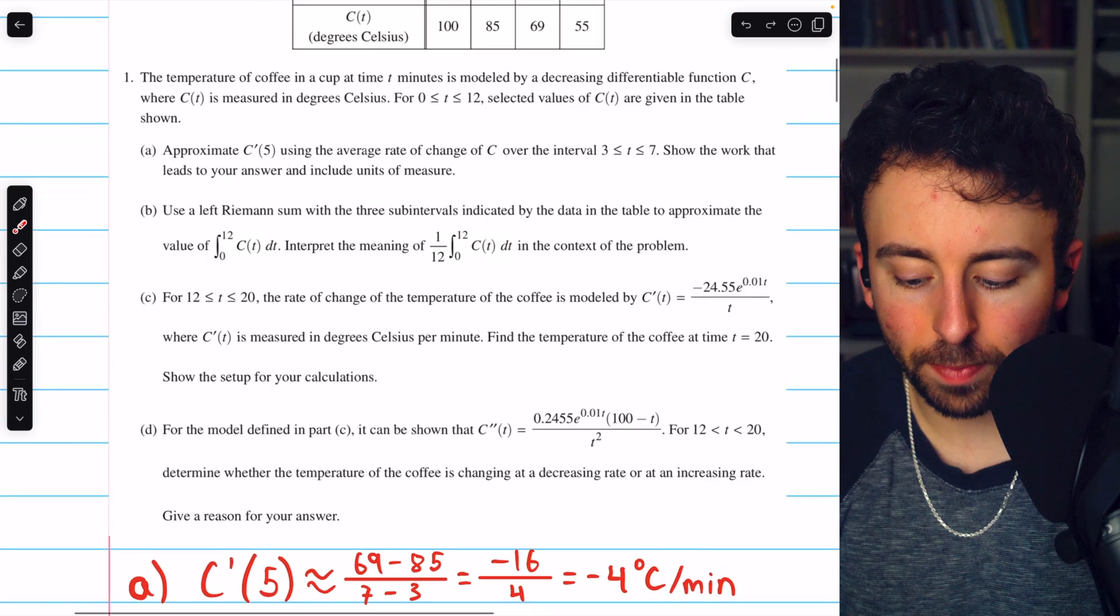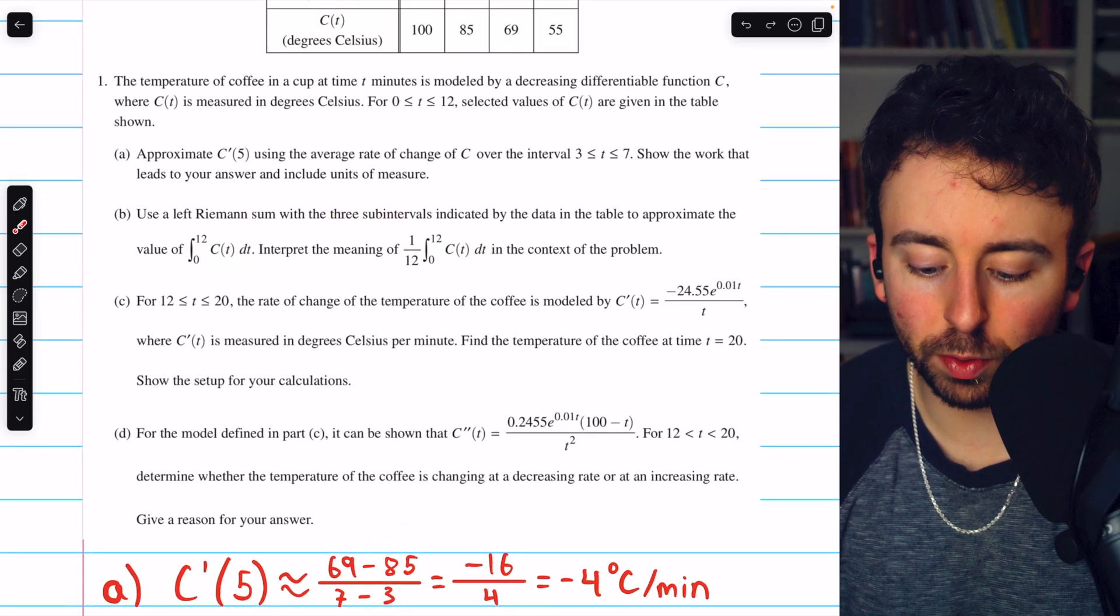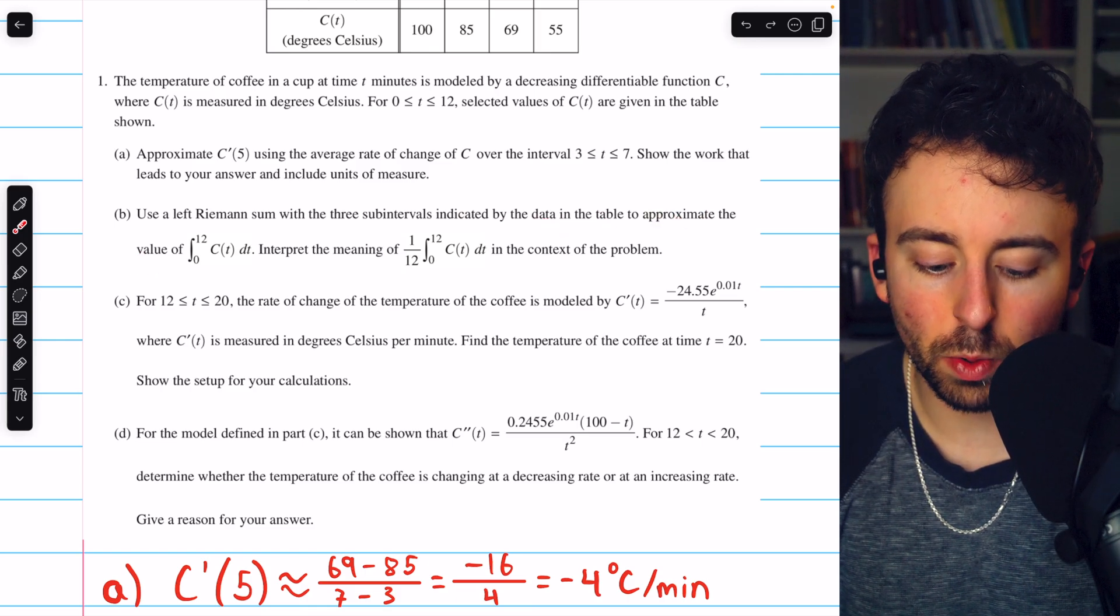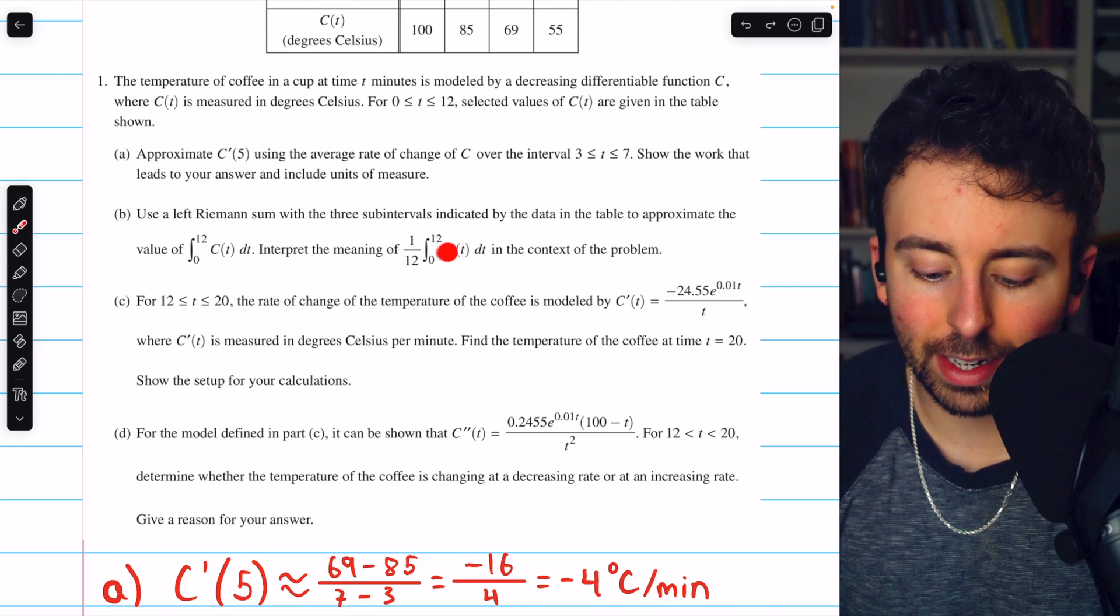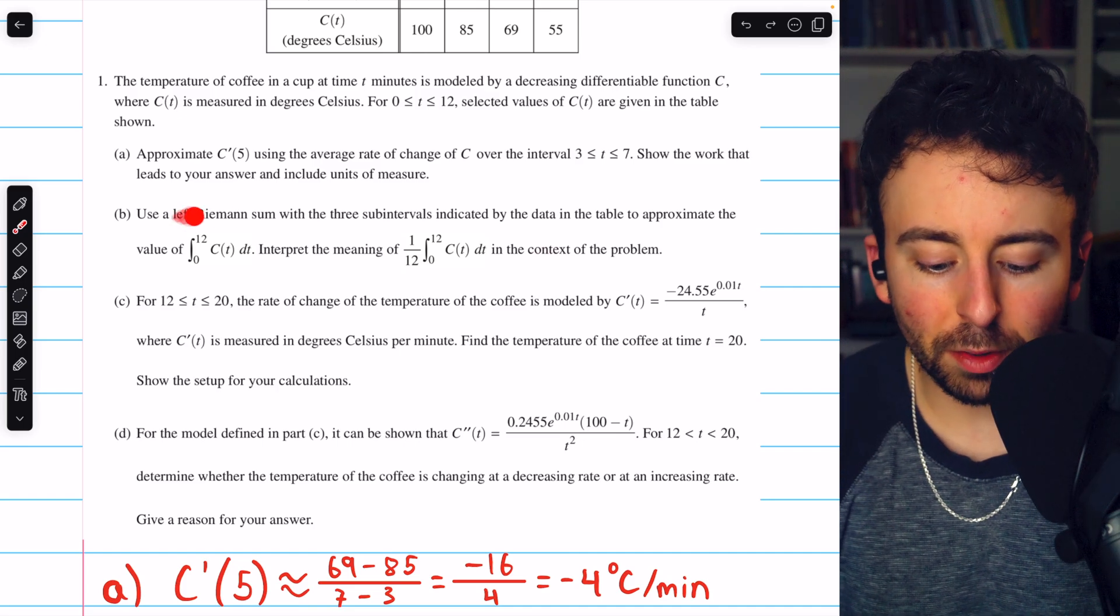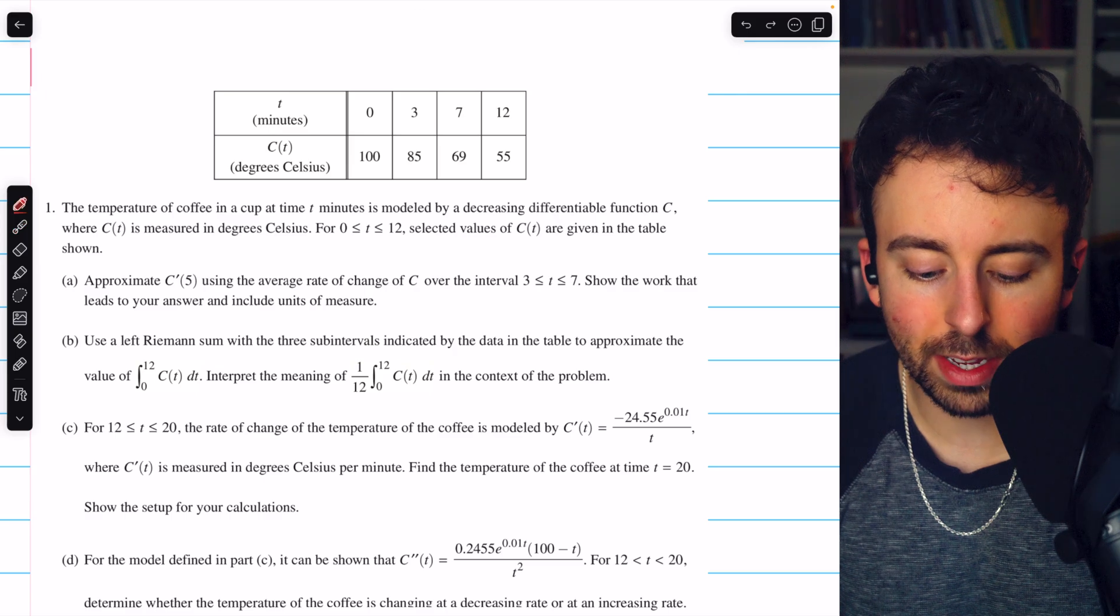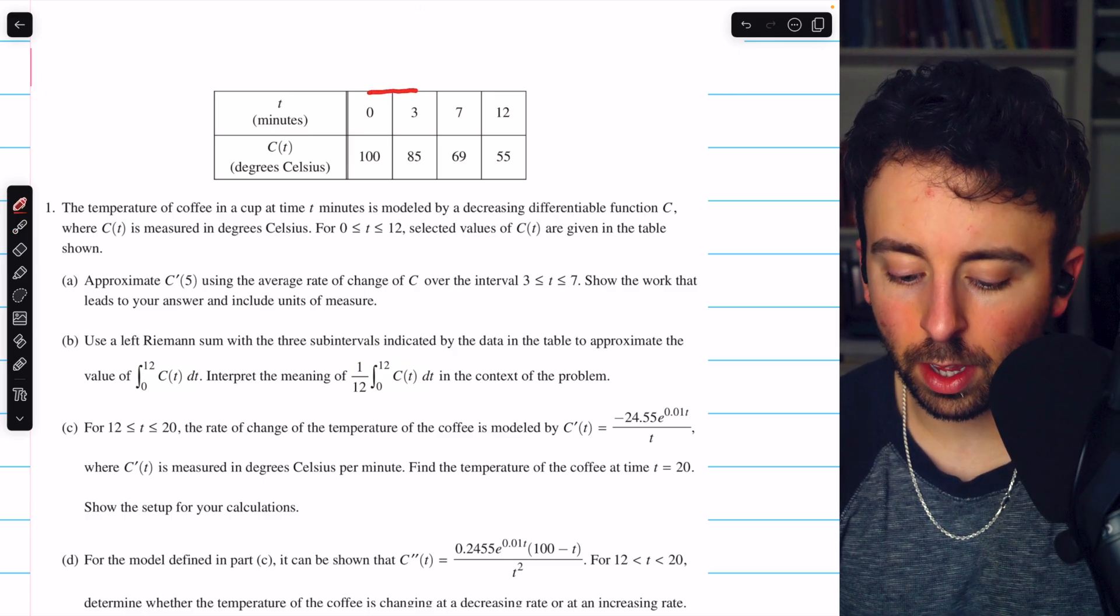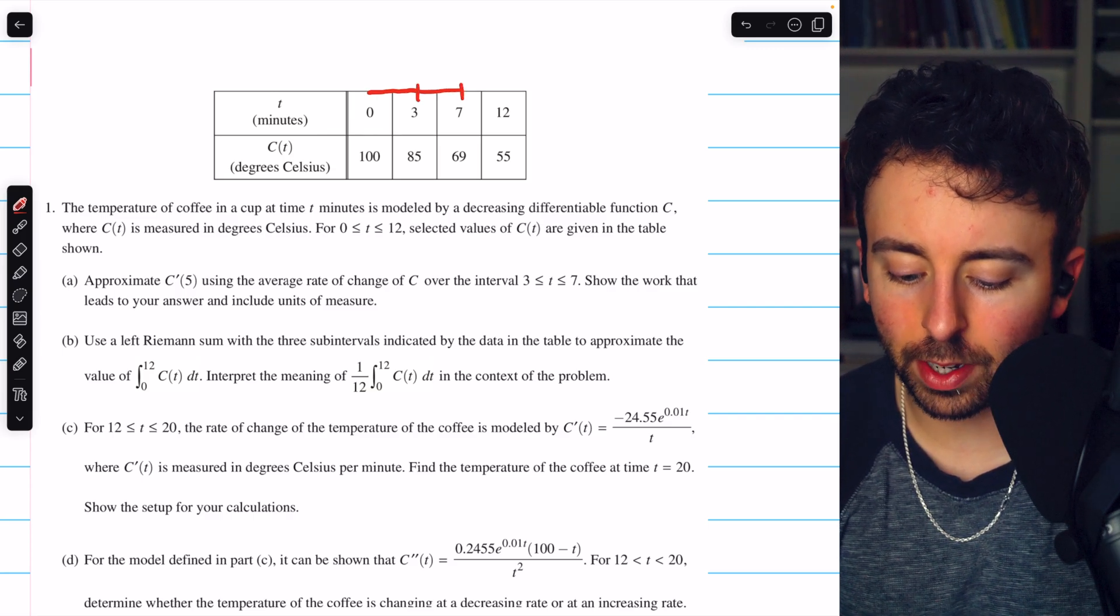Let's move on to part B. Use a left Riemann sum with the three subintervals indicated by the data in the table to approximate the value of the integral of c of t from 0 to 12, and then interpret the meaning of that integral divided by 12 in the context of the problem. So let's begin with the left Riemann sum. Coming up to look at our table, we're supposed to use three subintervals. So we'll have to go from 0 to 3, from 3 to 7, and from 7 to 12.